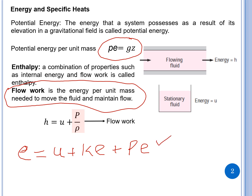The total energy expression includes kinetic energy, potential energy, and internal energy, but it does not include flow work. So we need another term to include flow work, and we use enthalpy. Enthalpy is a combination of internal energy and flow work, so the total energy becomes h plus kinetic energy plus potential energy, where h is internal energy u plus p over rho, which is flow work.